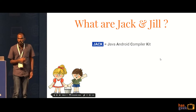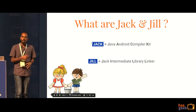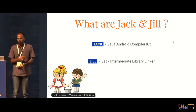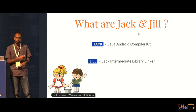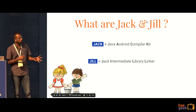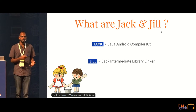Jack stands for Java Android Compiler Kit and Jill is the Intermediate Library Linker. Jack basically takes your Java source code in your Android app and converts it directly into the dex files that are there in your Android app. Jill is responsible for taking any external libraries that you're using and converting them into a format that Jack can understand. There is a special format that it converts it into called dot Jack.